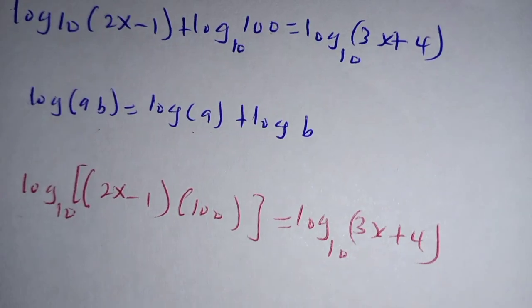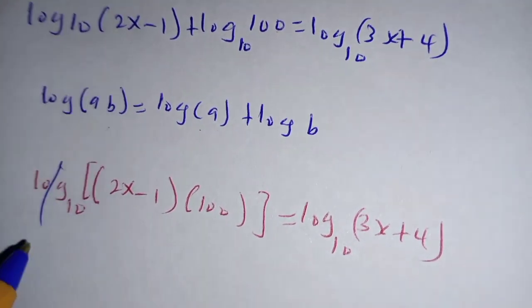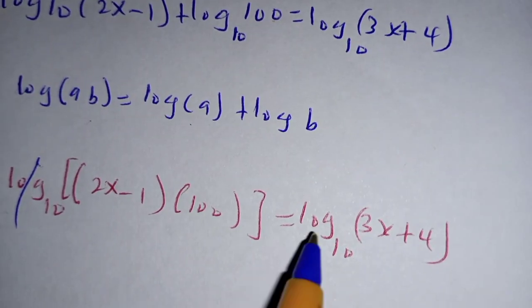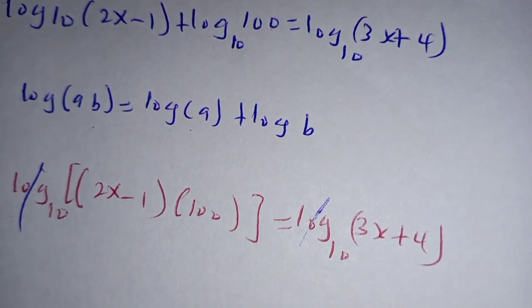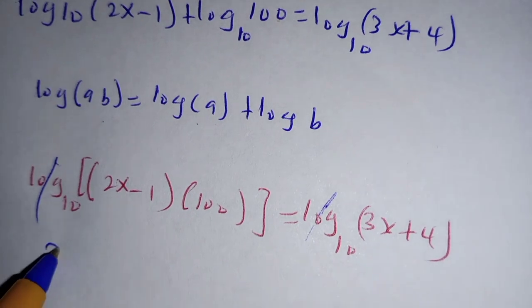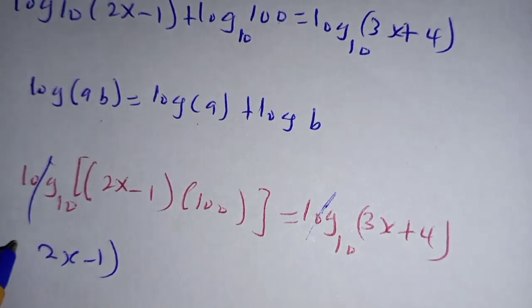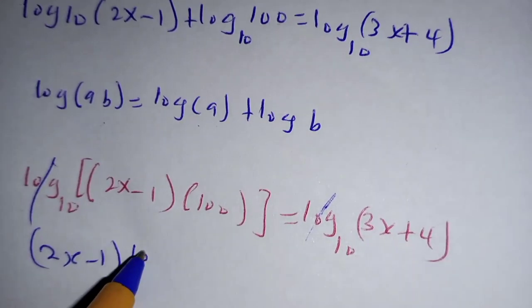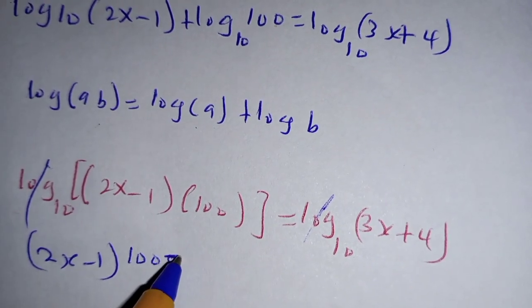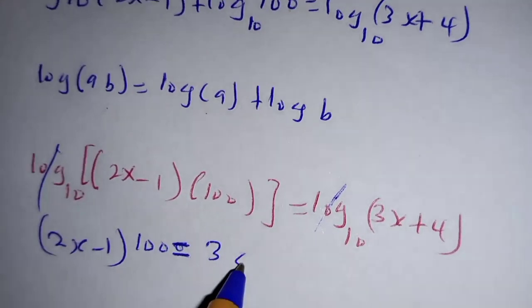Log to base 10 can cancel since it is appearing on both sides. So that now we shall be left with (2x - 1) multiplied by 100, which is equal to 3x + 4.